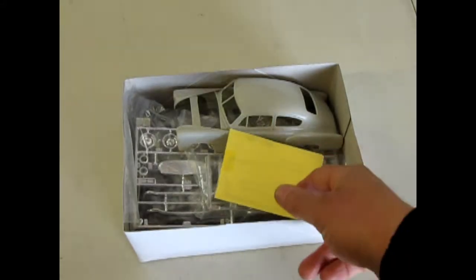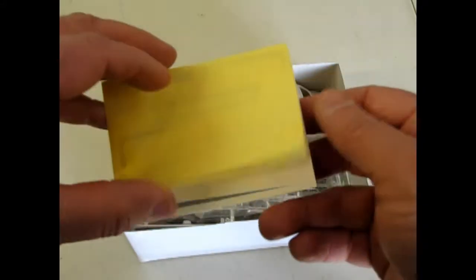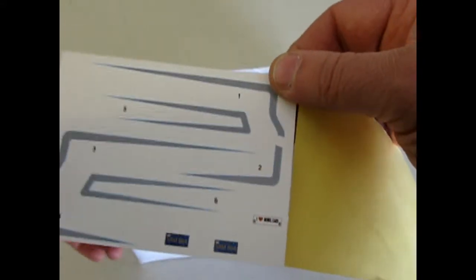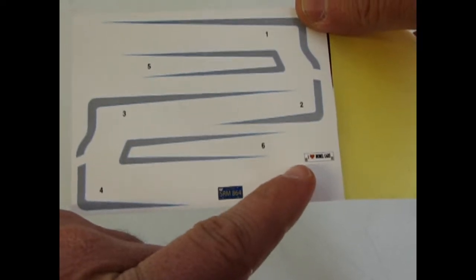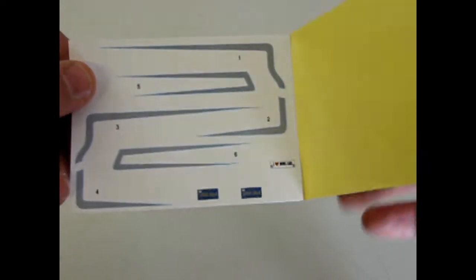So now let's take a look at the decals and see what colors they're in. Here you get this nice silver with the blue pinstripe and the little decal that says I love model cars. It's a bumper sticker. Now let's take a look at the plastic in this kit.